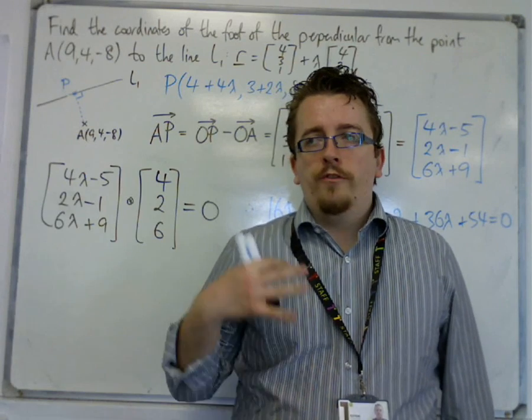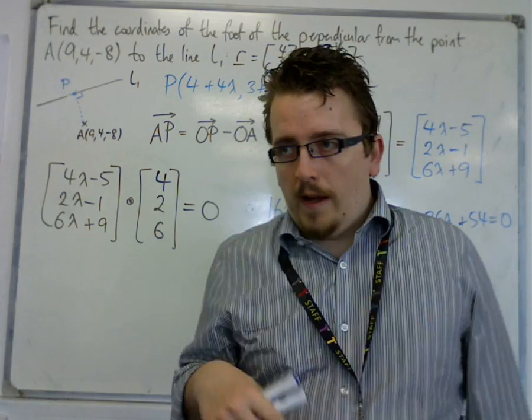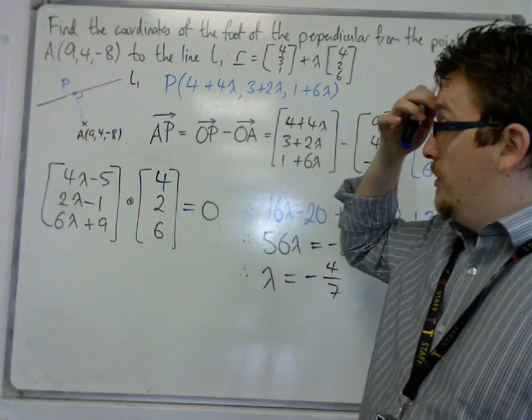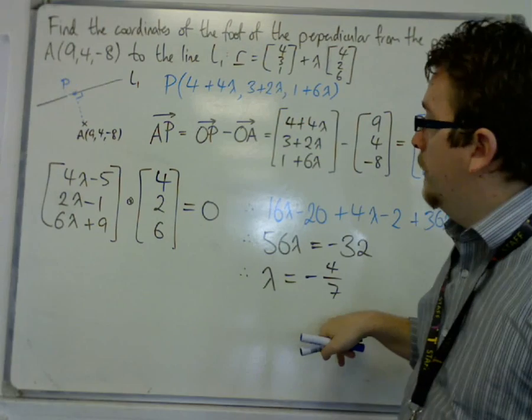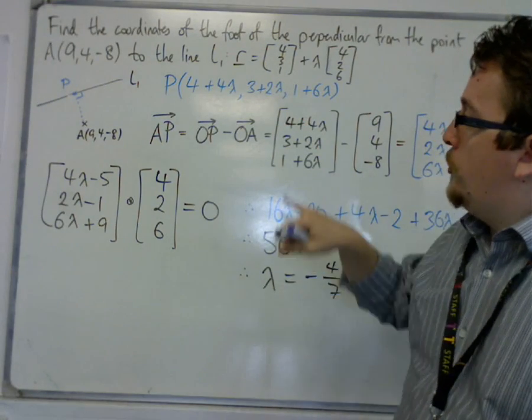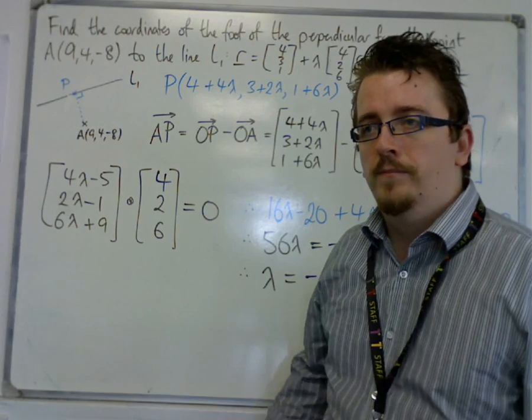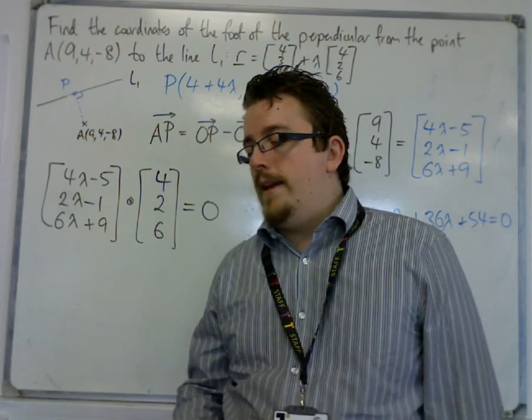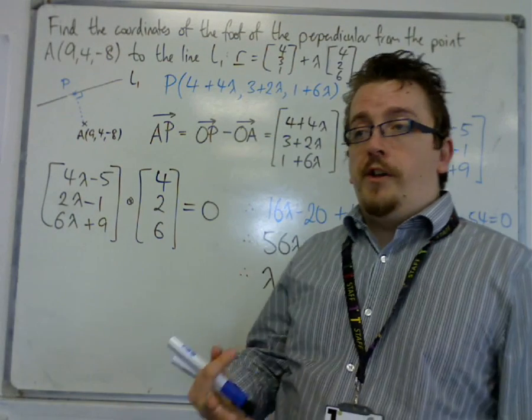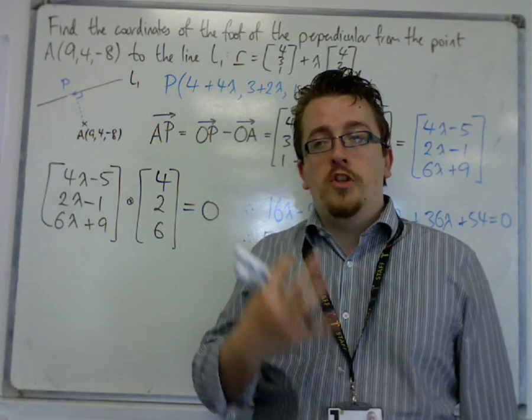Okay, so in continuation from the previous video, which explained how you can work out the value of lambda, that you can then substitute into the coordinates of P to work out the coordinates of the foot of the perpendicular, the next problem would be, well, find the shortest distance from a point to a line.